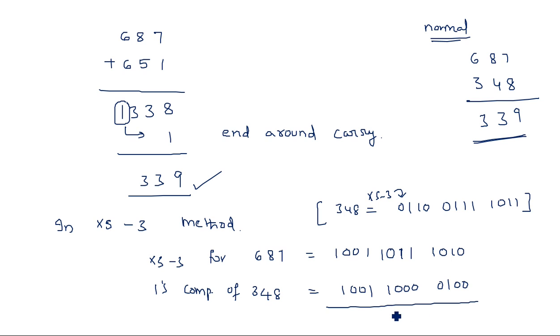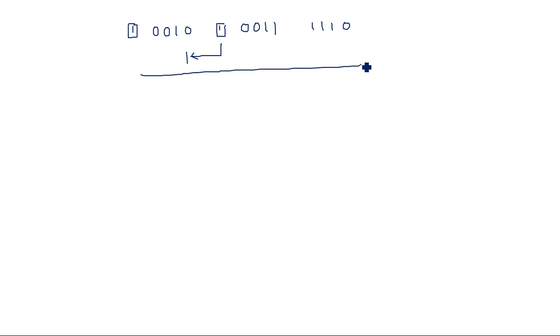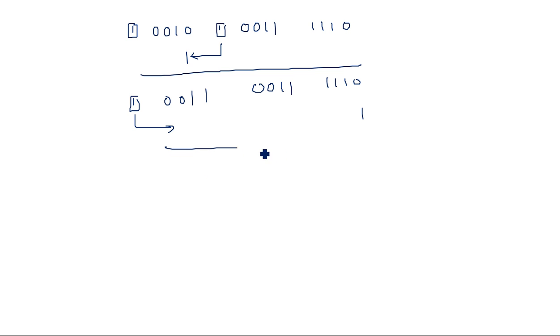Now add these two XS3 values together. The result has carries generated. This carry must be added back as end around carry. After adding the end around carry, we get the binary result. Since we are in XS3 format, we need to correct the result: subtract 3 (0011) from groups where carry was generated, and add 3 (0011) to groups where no carry was generated, to convert back from XS3.